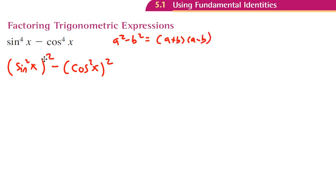And see how I was able to write my first expression as some a. I was able to write my second expression as some b. So now my factor form of this is going to be sine squared of x plus cosine squared of x. And then we have sine squared of x minus cosine squared of x.